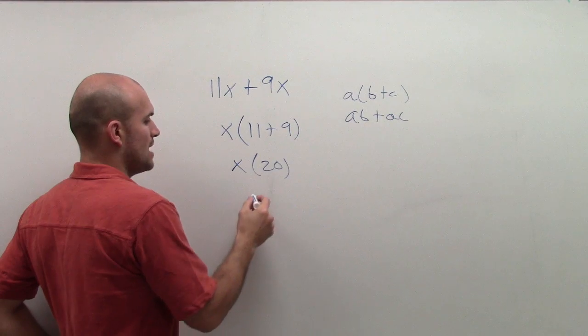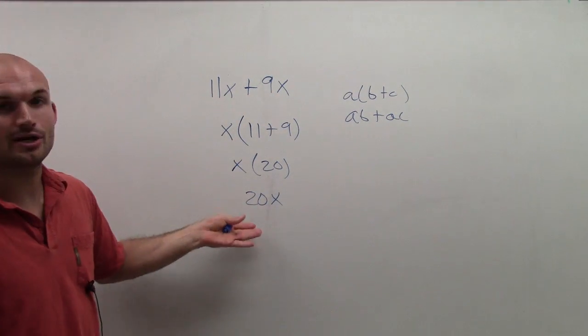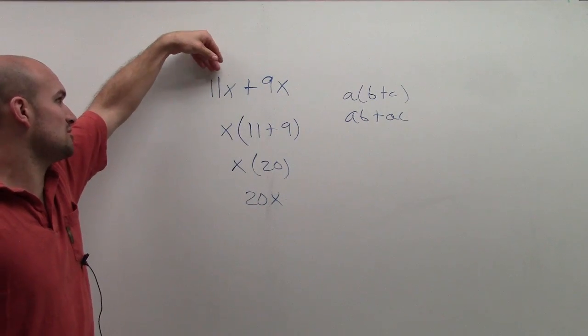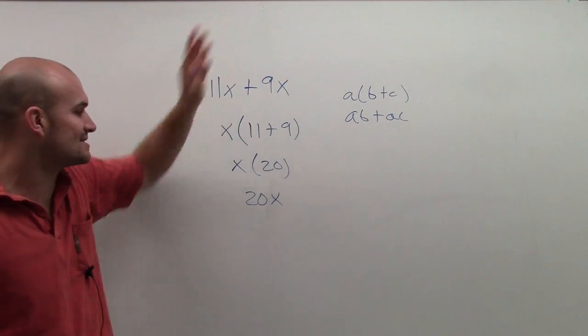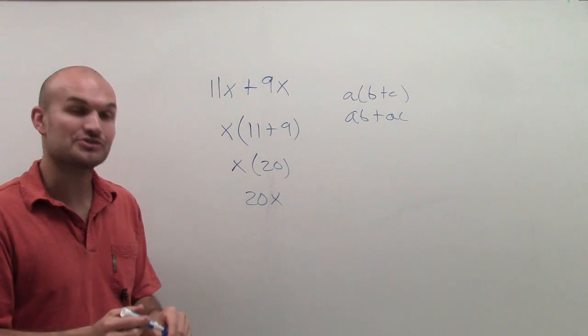Then we can use the commutative property to get 20 times x. And there you go. That's just the same way as just adding 11x plus 9x to get 20x, except now I'm showing you by using the distributive property.